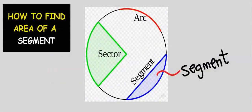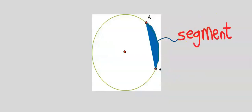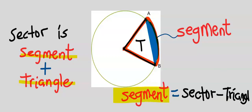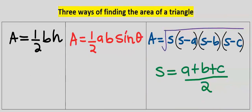Let's consider how to find the area of a segment. This line is known as a chord and the shaded portion is known as a segment. A segment is usually inside a sector. Inside a sector there is both a segment and a triangle, so a segment is a sector minus the triangle.